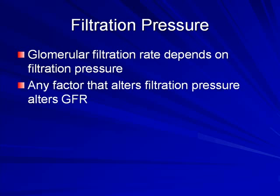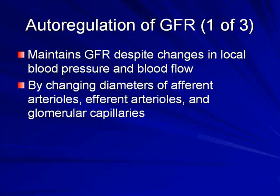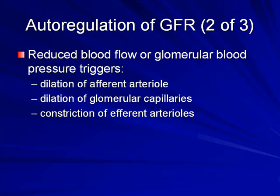The glomerulus generates about 180 liters of filtrate per day, 99% of which is reabsorbed in the renal tubules. GFR depends on filtration pressure — any factor altering that pressure will alter GFR. There are three levels of control: autoregulation at the local level, hormonal regulation, and the autonomic nervous system — primarily the sympathetic division. Autoregulation maintains GFR despite changes in local blood pressure through changes in diameter of afferent arterioles, efferent arterioles, and glomerular capillaries.